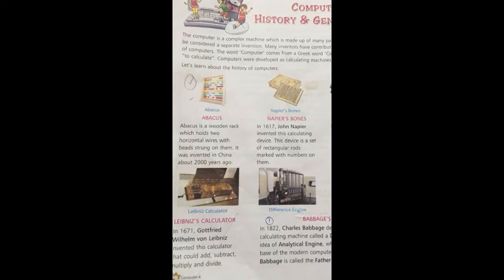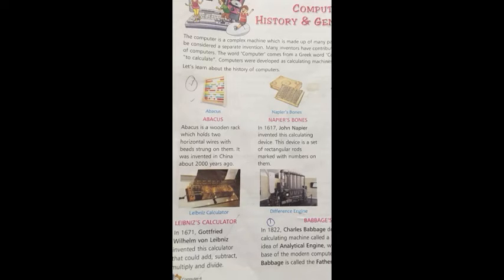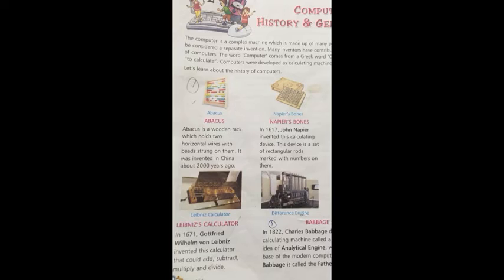In 1614 AD, Napier's Bones was invented by John Napier. This device is a set of rectangular rods marked with numbers on them, used to simplify calculations.